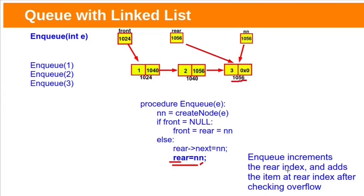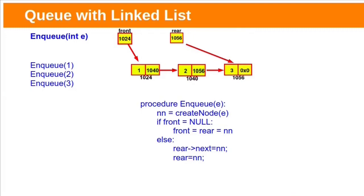In array implementation we increment the rear index and add the item at the rear index after checking overflow. But in linked list implementation we do not need to check for overflow condition because linked lists are not stored contiguously in memory — linked lists can grow as needed. Right now we have three items in our queue. Front is pointing to the starting node and rear is pointing to the last node.